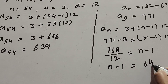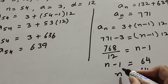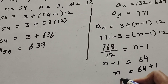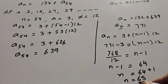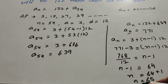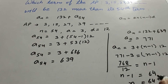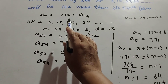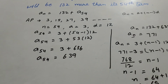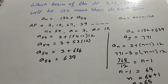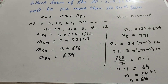So n minus 1 equals 64, therefore n equals 65. The total number of terms is 65, so the 65th term of the AP is 771, and the 65th term is 132 more than its 54th term. Thanks for watching — like, comment, share, and subscribe to my YouTube channel.